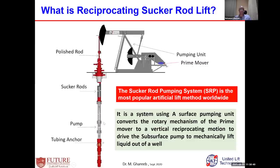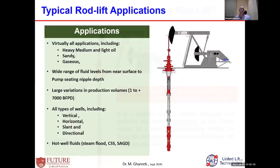The downhole pumps are activated mechanically through the rod string connected to the pumping unit, which uses a prime mover providing rotary motion. The pumping unit converts that rotary motion to reciprocating up-and-down motion, transferred to the downhole pump to activate it. Some articles say 75%, some say 72%, but it is the most popular type of artificial lift by number of wells. Whatever location you visit, you will find this type of artificial lift.